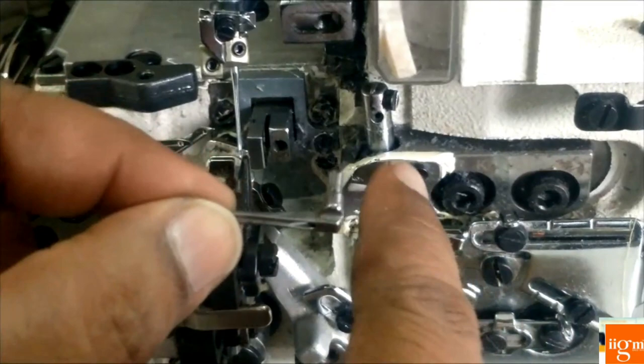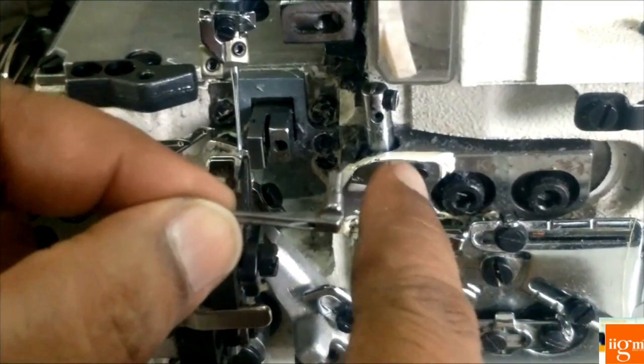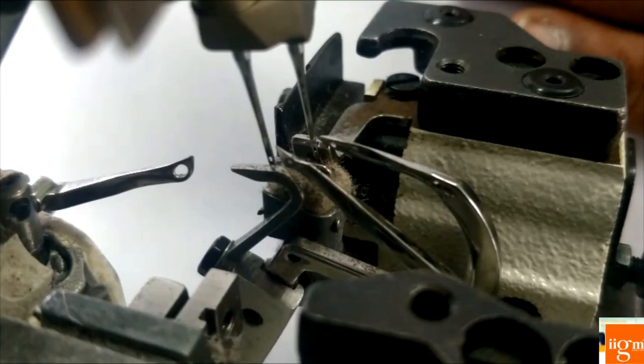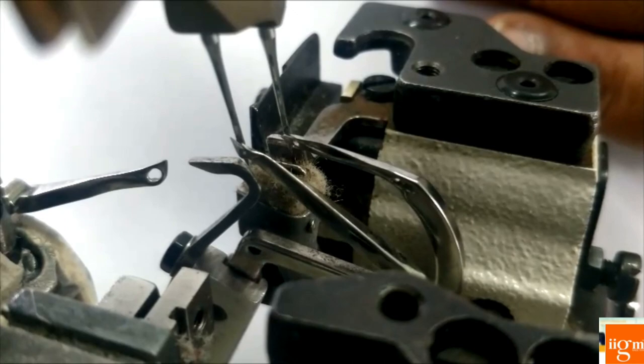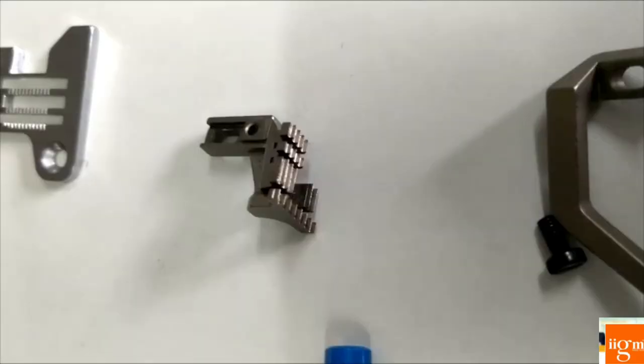This is the upper looper. We need to insert this upper looper into this rod. Bring the chain looper tip to the center of the needle's scarf and confirm that between chain looper tip and needle center there should be 0.05 mm clearance.